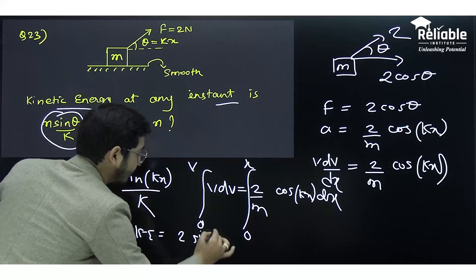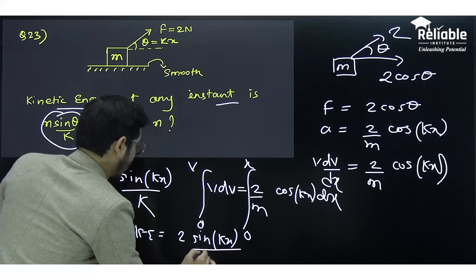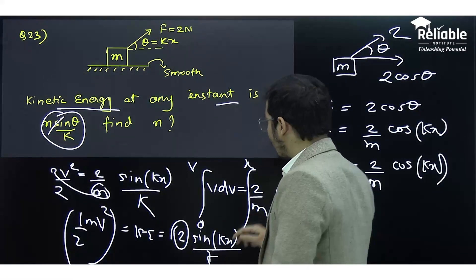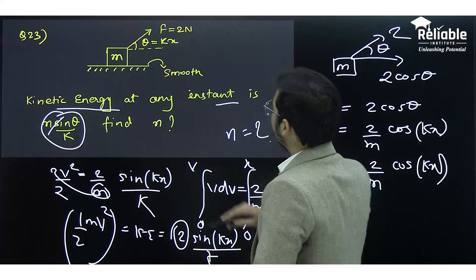If I take the mass to this side, we get (1/2)mv², which is the kinetic energy expression: 2sin(kx)/k. They are asking for the value of n. It is visible that n equals 2.